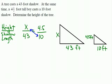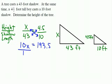Also show the cross multiplication again. We get 10x equals 43 times 4 and a half. 193.5 divided by the 10. X equals...